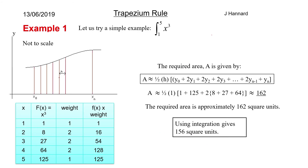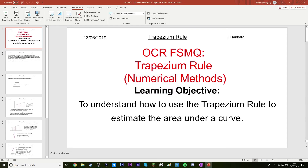Our answer of 162 is an overestimate. You can see this because if you join the top edges of the strips with straight lines, those lines sit above the curve, so we're including a little extra area that we didn't want. If it were an underestimate, the lines would go under the curve instead.